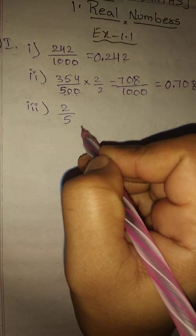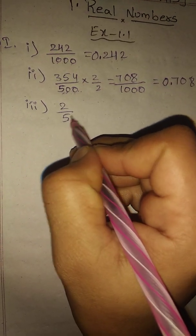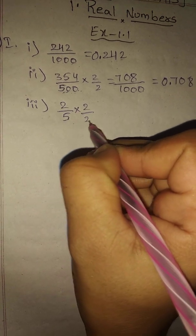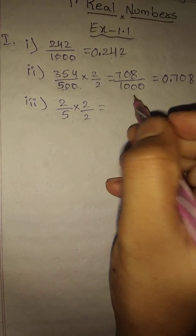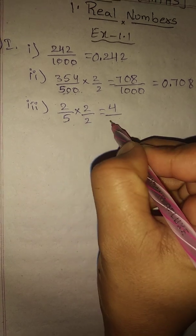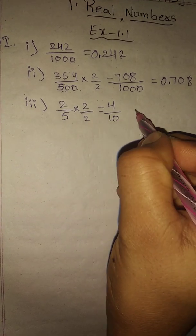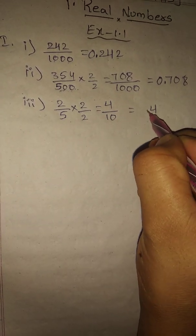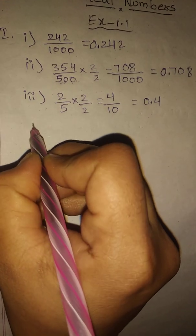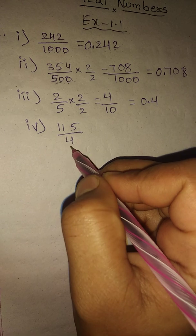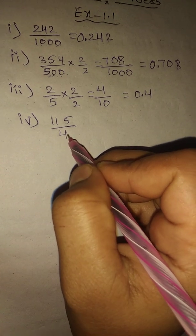Third problem: 22 by 5. We can easily convert 5 into 10, so multiply both numerator and denominator by 2: 22 times 2 is 44, and 5 times 2 is 10. The denominator has only one zero, so the answer is 4.4.